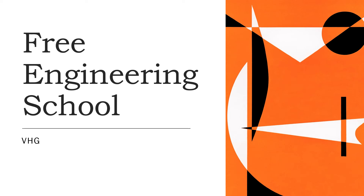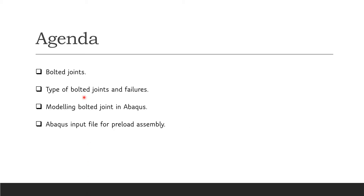Hi everyone, welcome back to Free Engineering School. Today we are going to discuss about the bolted joint studies. In today's agenda, we will see the bolted joints, what are the types of bolted joints and the failures, appropriate failures in the assembly level, and how we can model the bolted joints in Abaqus and the respective Abaqus file to download the assembly.